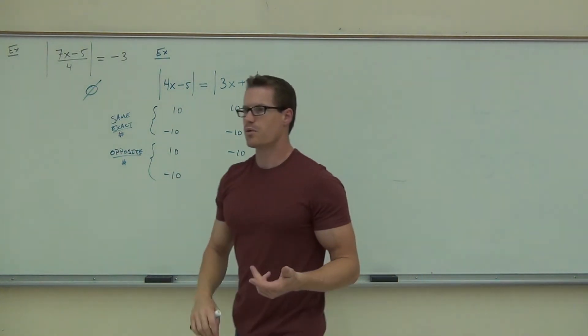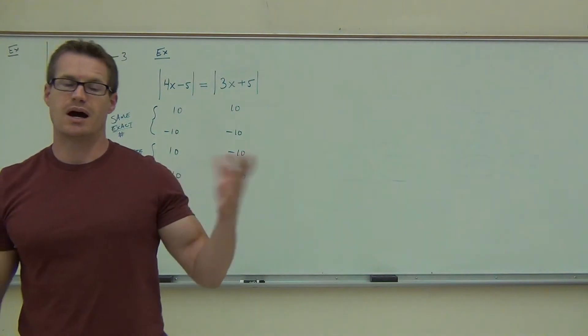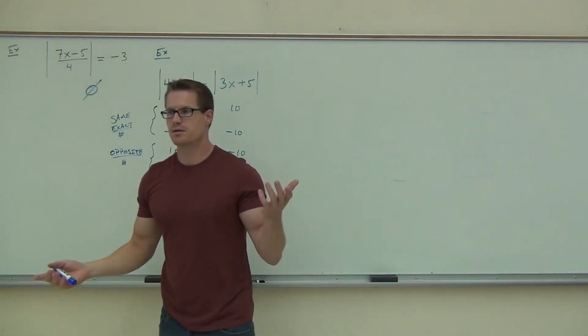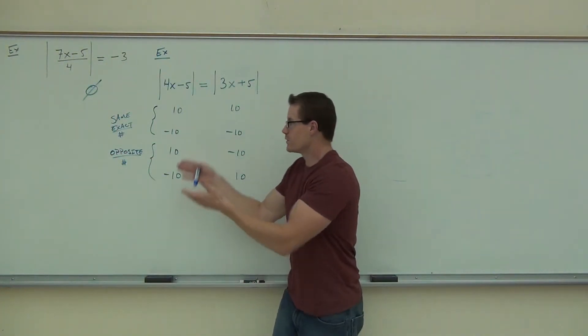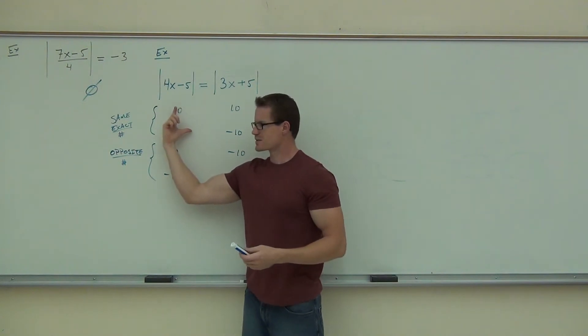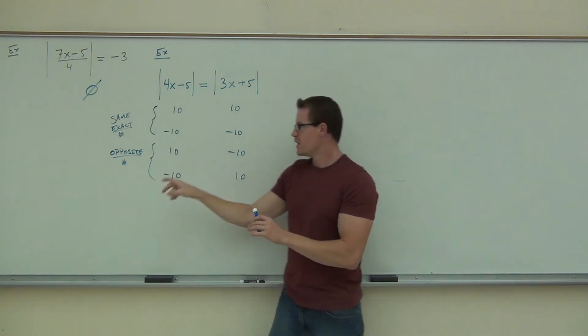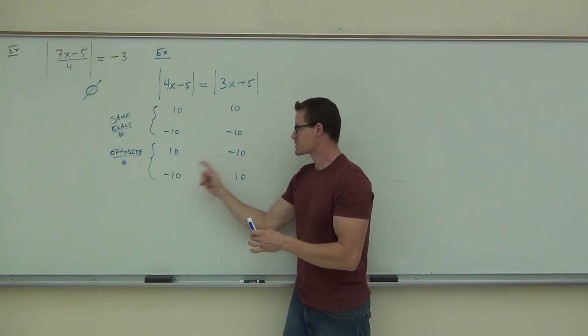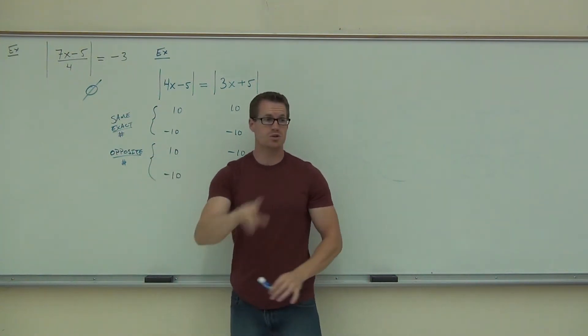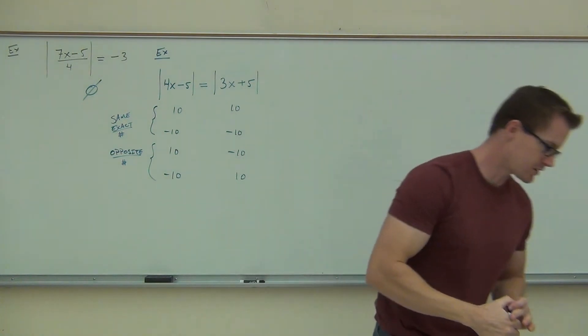So just like before, this is going to lead us to how many equations do you think? Two. Not four. We don't need four of them, because these are going to work out the same. This is the same case. Same number, same number. That's one equation here. This one is when you have opposite signs. Opposite, opposite. That's another case. So we're still going to get two equations out of this.